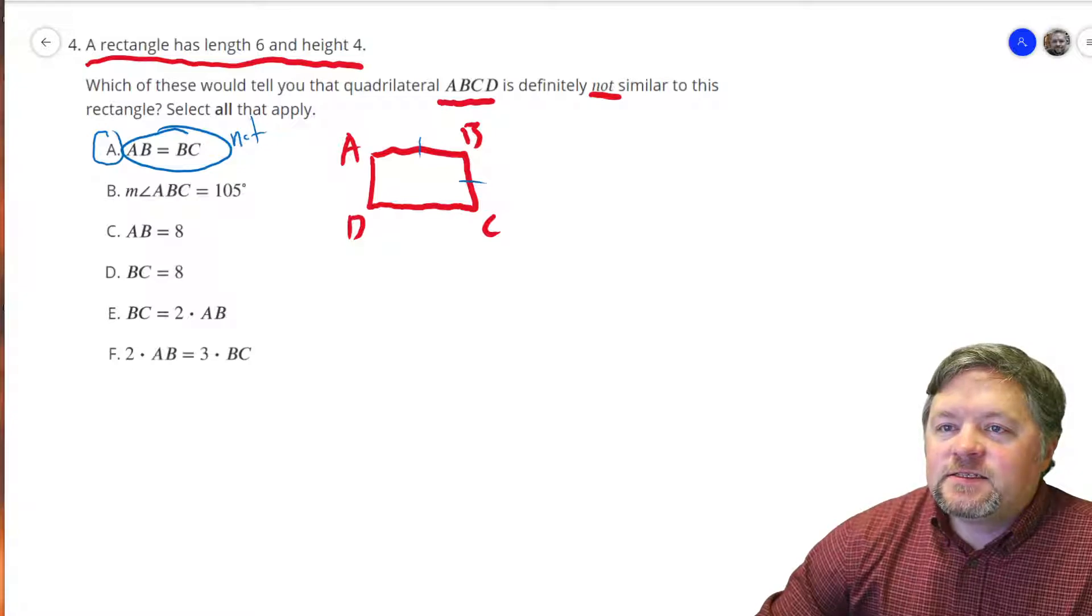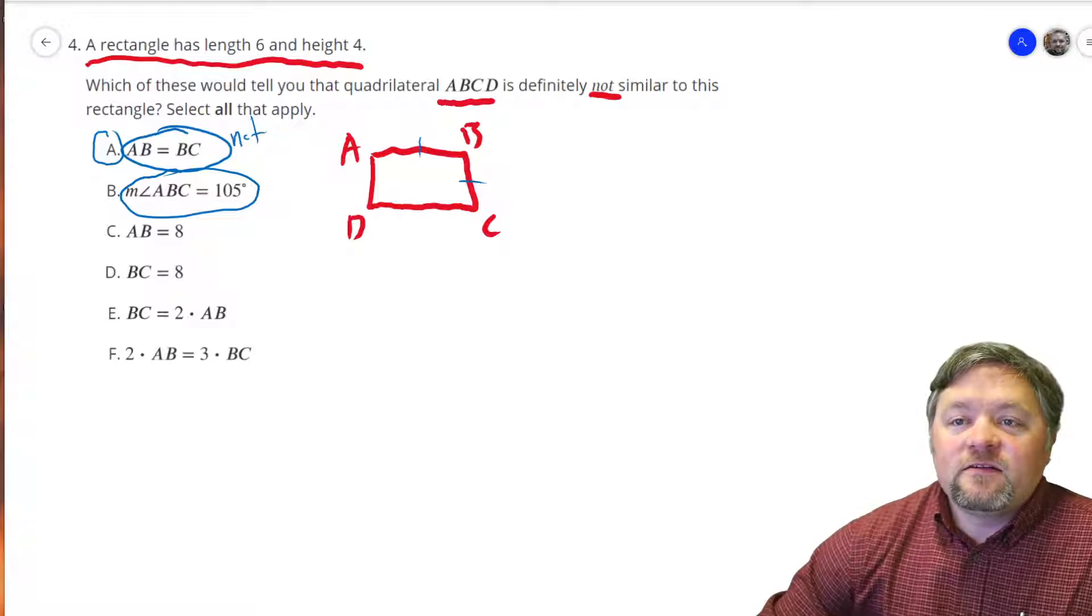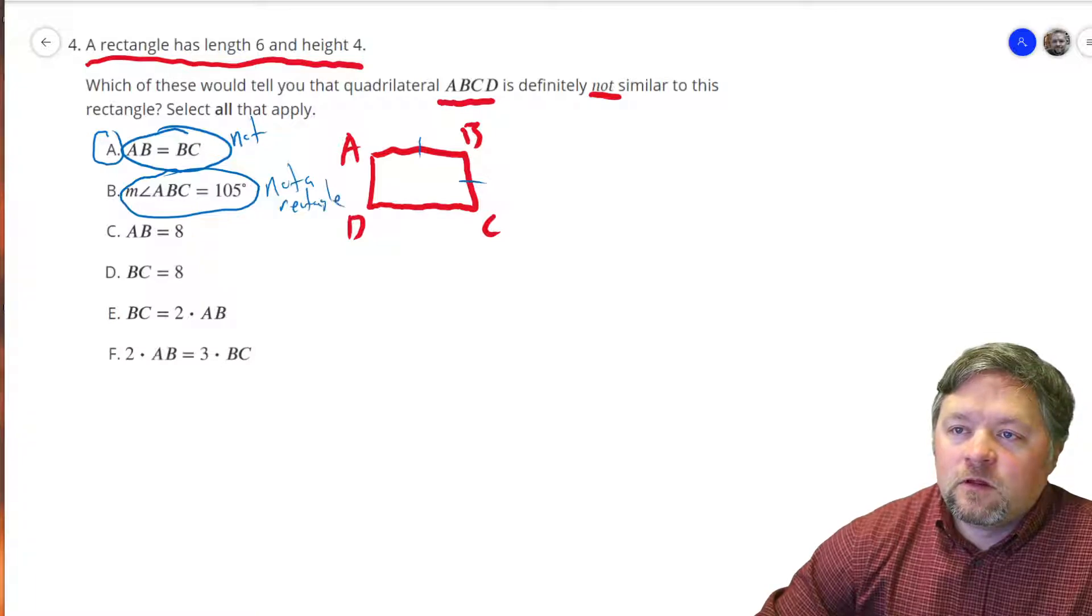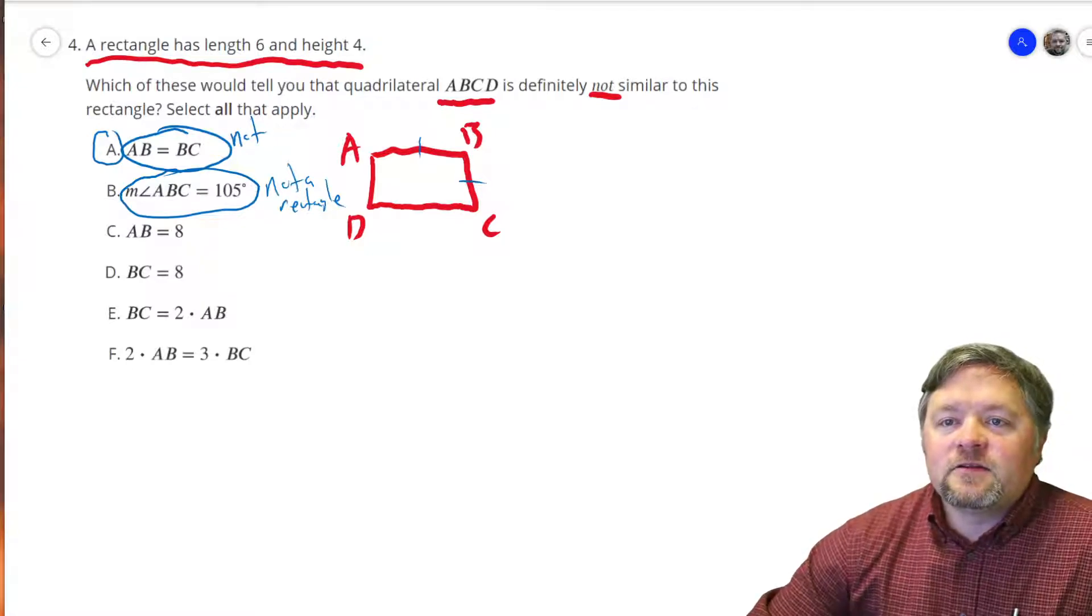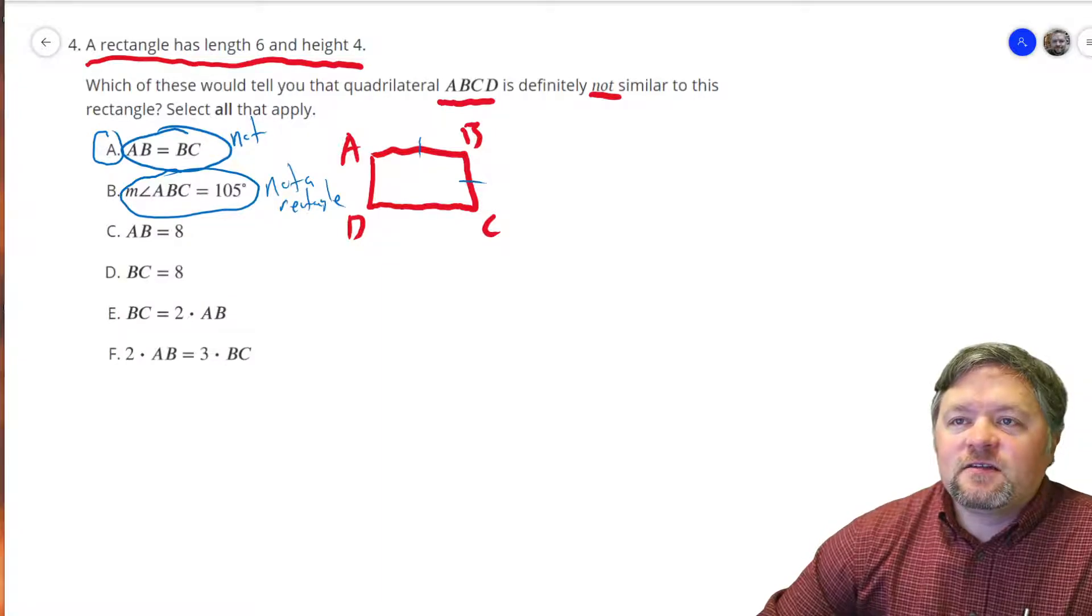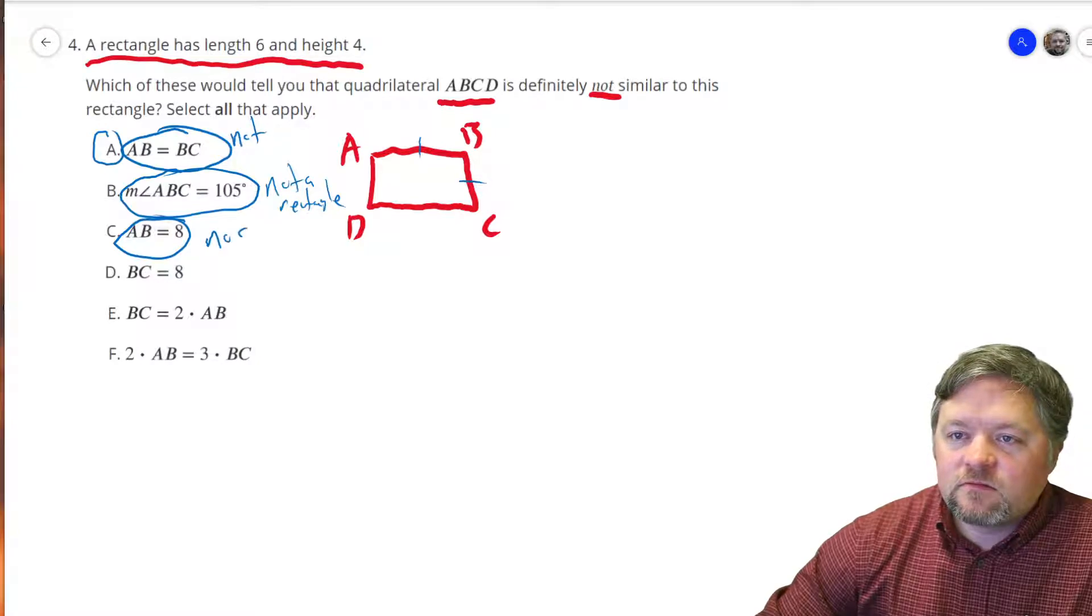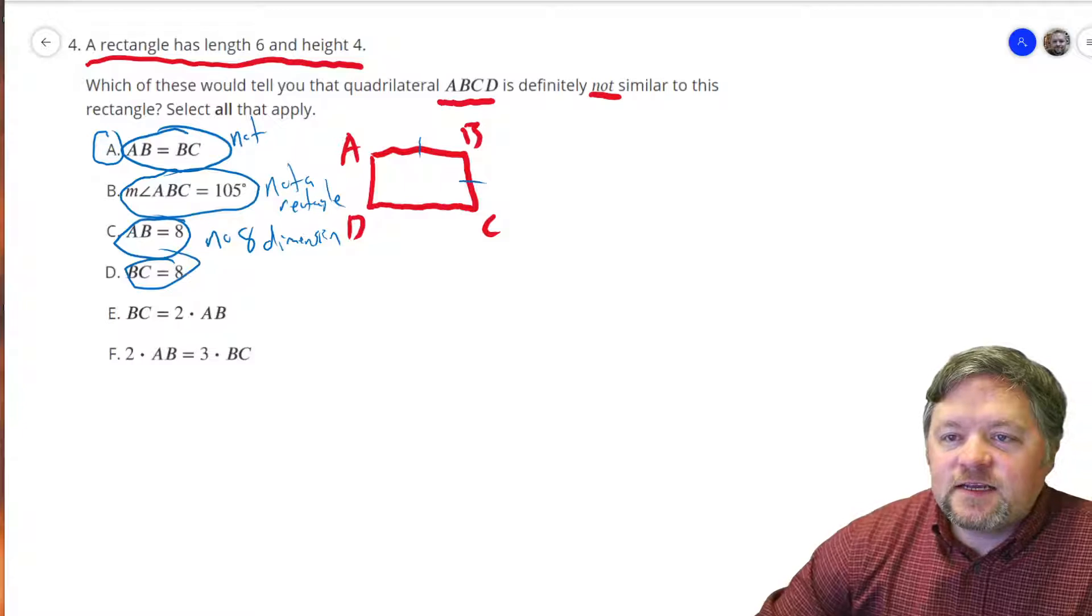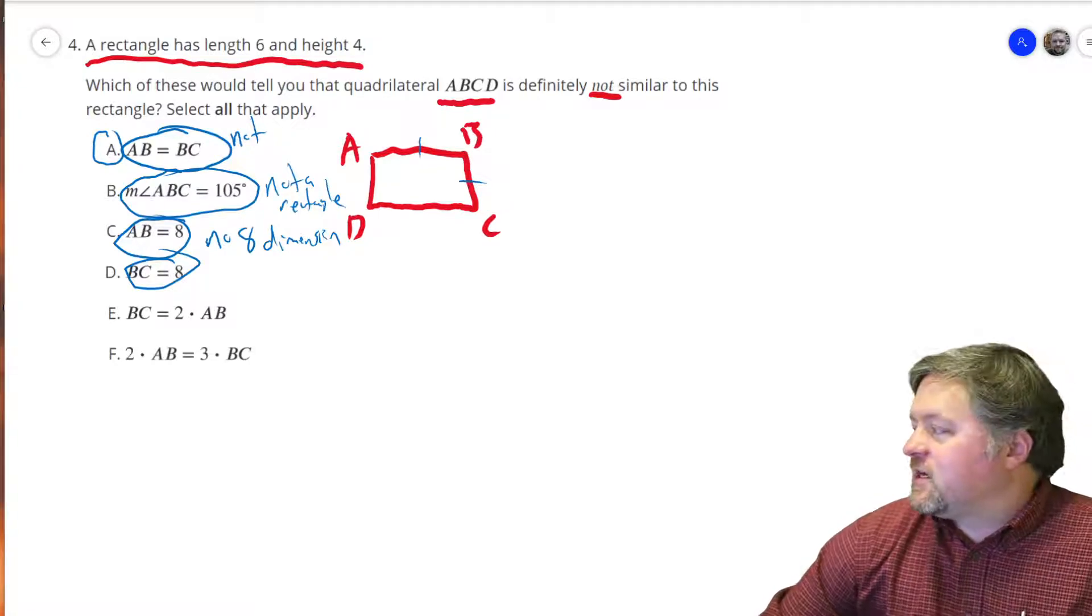The measurement of angle ABC is 105 degrees. Well, if we have an angle that's 105, we know it is not a rectangle. How about the length of AB is 8? Well, if this has a length of 6 and a height of 4, we've got no dimensions that are 8. We've got no dimension that's 8. What about this one? BC? Hey, that's the same thing. We have no dimension that is 8.